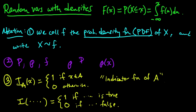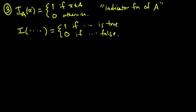Now let me give you some examples of very frequently occurring random variables with densities. So let's look at some examples.